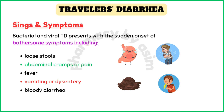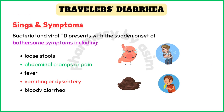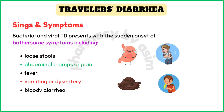Bacterial and viral traveler's diarrhea presents with the sudden onset of bothersome symptoms that can range from mild cramps and urgent loose stools to severe abdominal pain, fever, vomiting, and bloody diarrhea. Although with norovirus, vomiting may be more prominent. Untreated bacterial diarrhea usually lasts 3–7 days, viral diarrhea generally lasts 2–3 days, and protozoal diarrhea can persist for weeks to months without treatment.